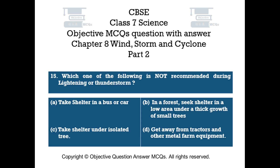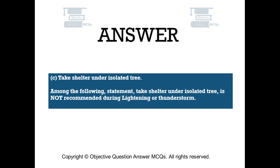Question number 15. Which one of the following is not recommended during lightning or thunderstorm? Option A: take shelter in a bus or car. Option B: in a forest, seek shelter in a low area under a thick growth of small trees. Option C: take shelter under an isolated tree. Option D: get away from tractors and other metal farm equipment. The right answer is Option C: take shelter under an isolated tree. This action is not recommended during lightning or thunderstorm.